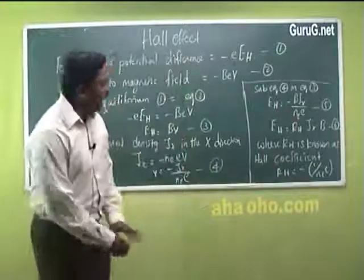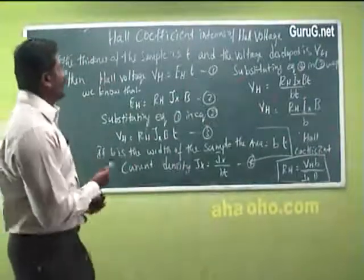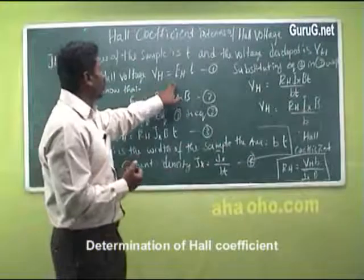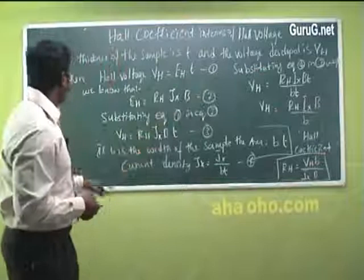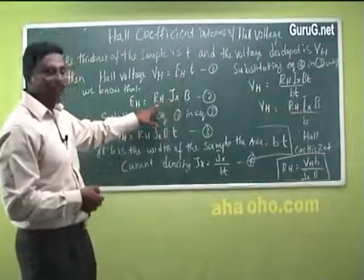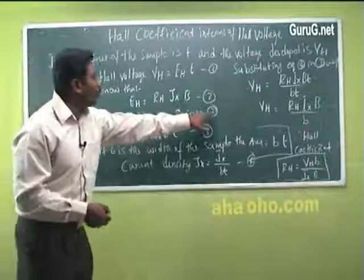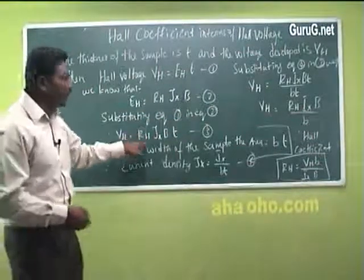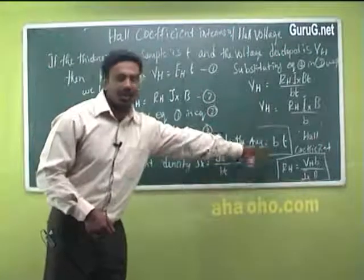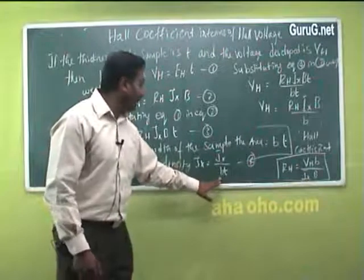The negative sign indicates that the hall voltage developed is along the negative y-direction. Hall coefficient in terms of hall voltage: if the thickness of the sample is t and the voltage developed is VH, then VH equals EH·t (equation 1). Since EH equals RH·JX·B, substituting gives VH equals RH·JX·B·t (equation 3). If b is the width of the sample, then area equals b·t, and current density JX equals IX / (b·t) (equation 4).